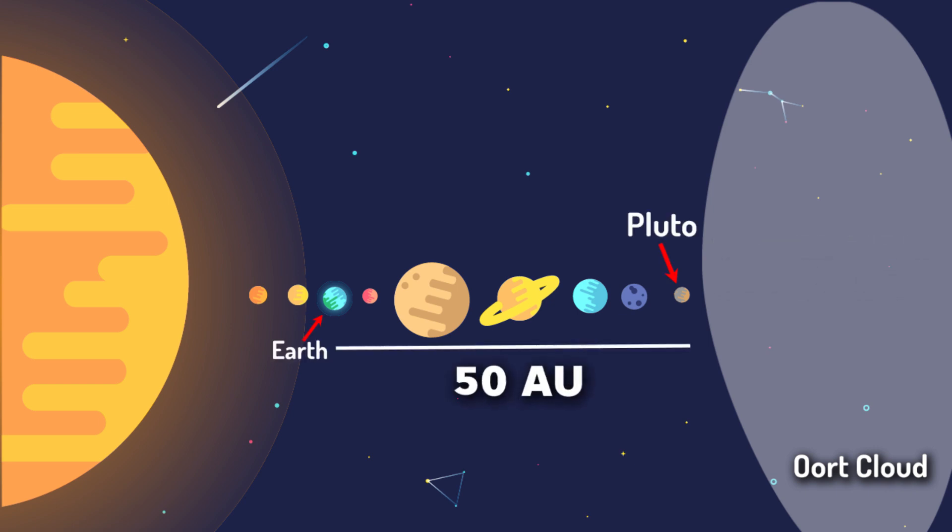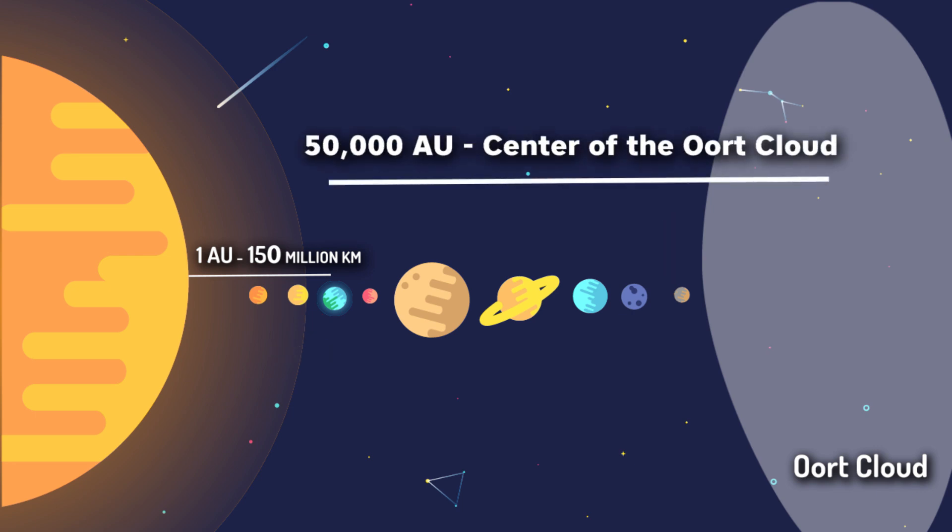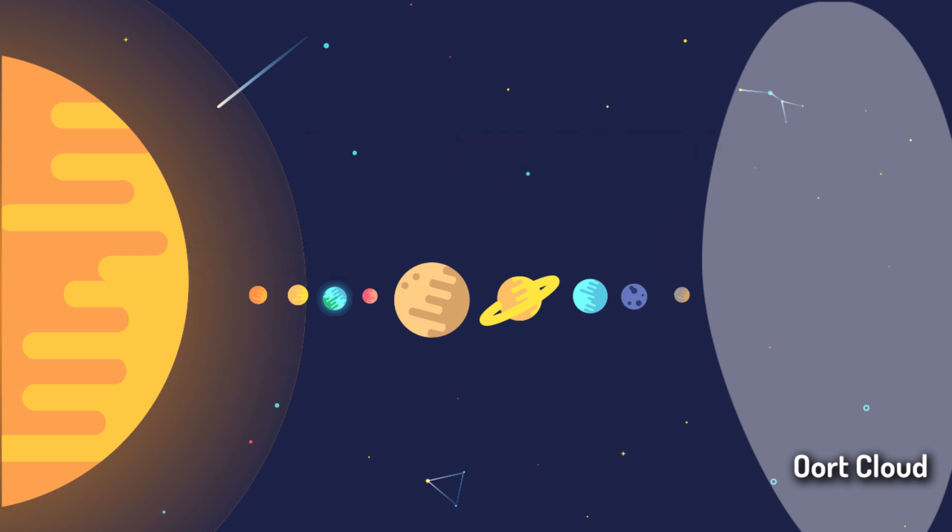Pluto is 50 astronomical units from us. One astronomical unit is a distance between Earth and Sun, 150 million kilometers. The heart of the Oort Cloud is about 50,000 astronomical units. In a word, it's remote.